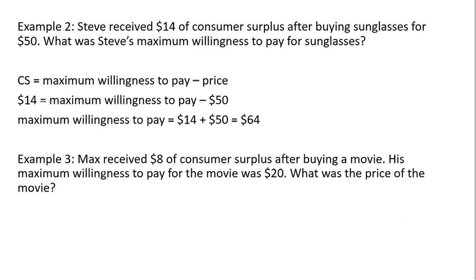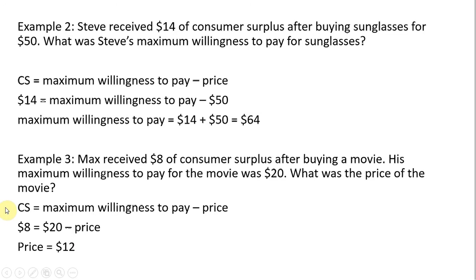The next example: Max received $8 of consumer surplus after buying a movie. His maximum willingness to pay for the movie was $20. What was the price of the movie? Consumer surplus equals maximum willingness to pay minus the price — there are three things, and we know two. Consumer surplus is $8, maximum willingness to pay is $20, so we solve for the price. The answer is $12, since $20 minus $12 gives us consumer surplus of $8.